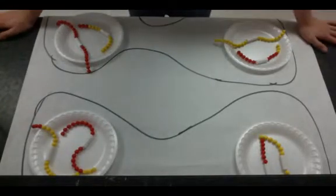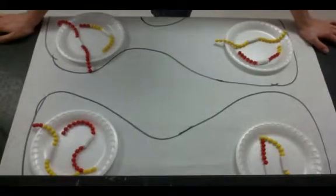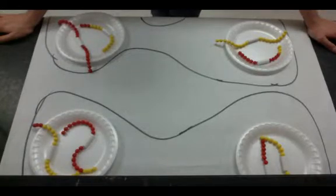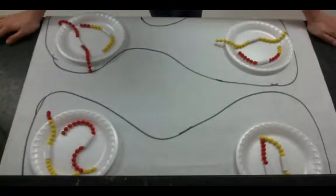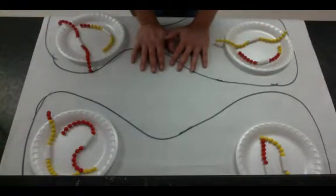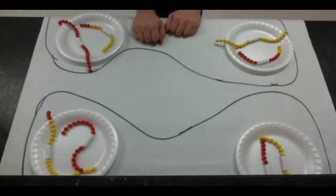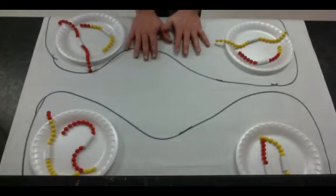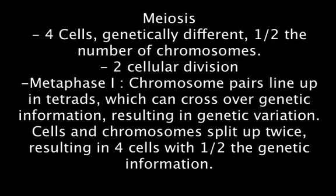So to recap: the first part of meiosis has prophase, metaphase, anaphase, and telophase. The big difference is that in metaphase chromosomes line up in pairs rather than single file, and crossing over can occur where they exchange some genetic information. They pull apart in pairs, cytokinesis occurs, and then the whole process happens again. The second time they all line up single file. What we end up with is half the number of chromosomes in each cell — these are your sperm or egg cells.